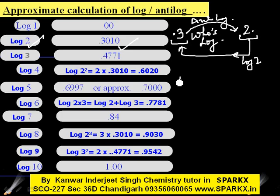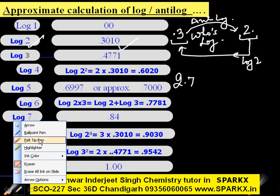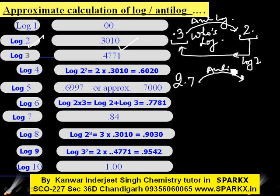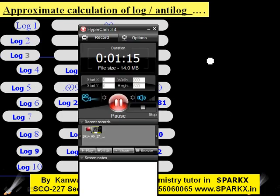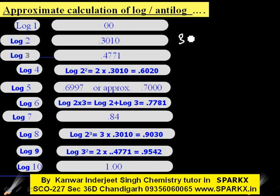Next example: suppose we are having 2.7. Here, 2 is the characteristic and 0.7 is the mantissa. After the decimal, we take the antilog of 0.7 only. The antilog of 0.7 is approximately 5, so it may be 4.9 or 5.15, giving us 5.15×10² which equals approximately 365.97.